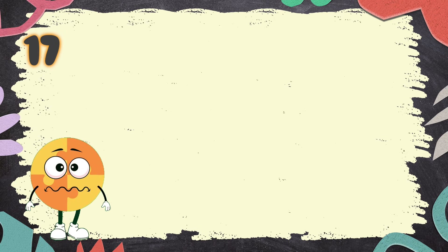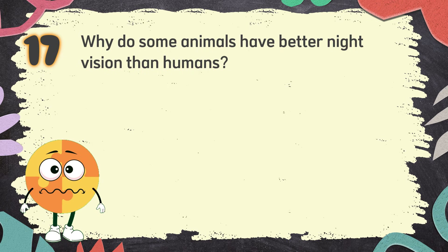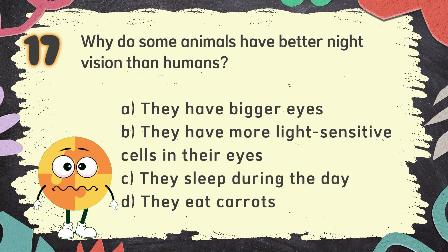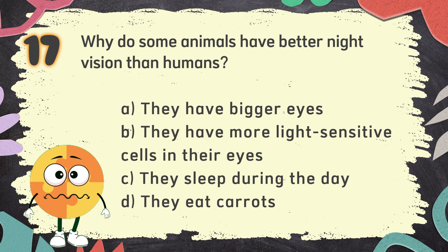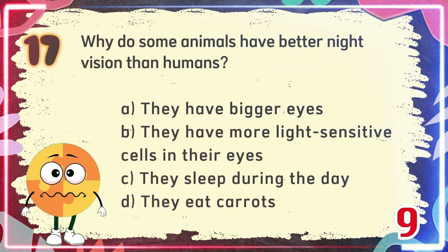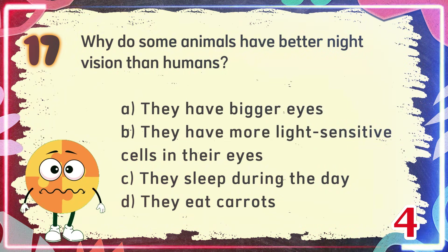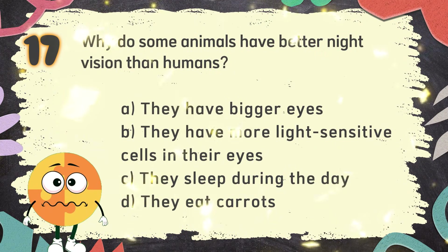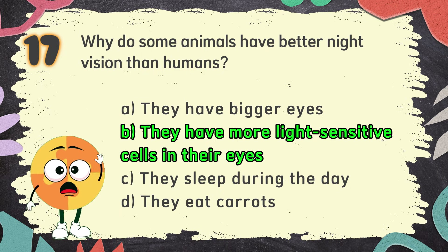Number 17. Why do some animals have better night vision than humans? The choices are: A. They have bigger eyes, B. They have more light-sensitive cells in their eyes, C. They sleep during the day, D. They eat carrots. The correct answer is B: They have more light-sensitive cells in their eyes.